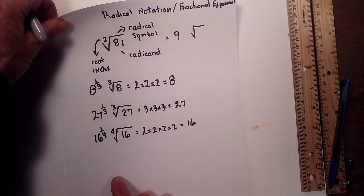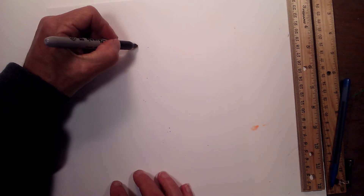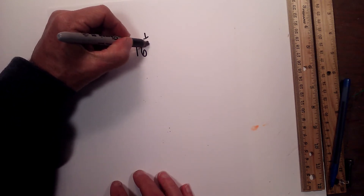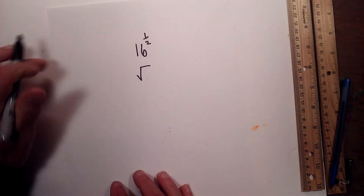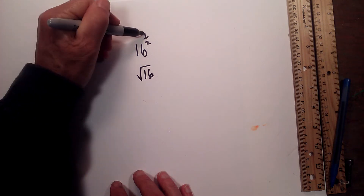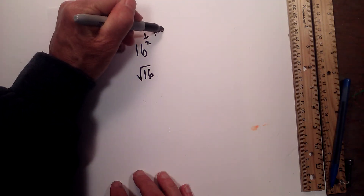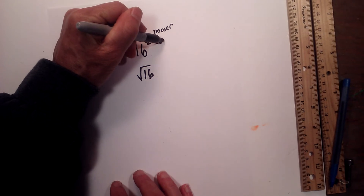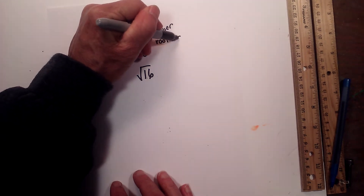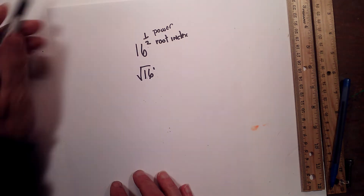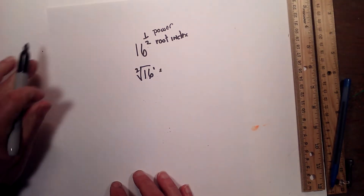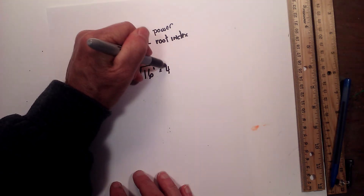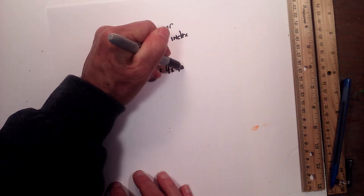So let's take a look at what these exponents are telling us. Let's look at 16 with the exponent 1/2. Let's rewrite it using the radical symbol — the radicand is 16. The top number tells us the power, and the bottom number is the root index. So this tells us 16 to the first power with a root index of 2. What number multiplied by itself twice is equal to 16? 4 times 4 is equal to 16.